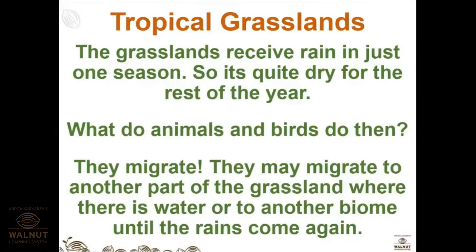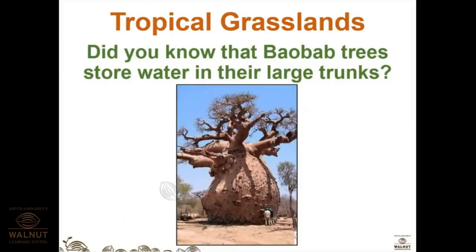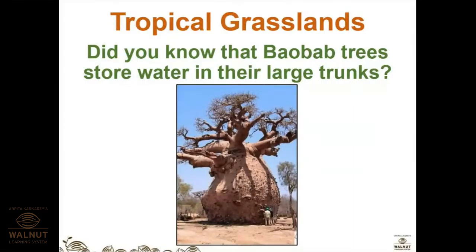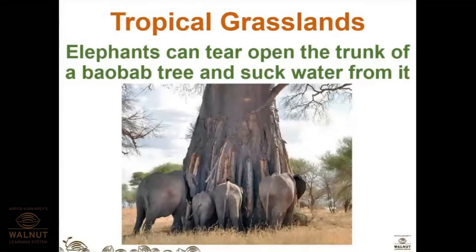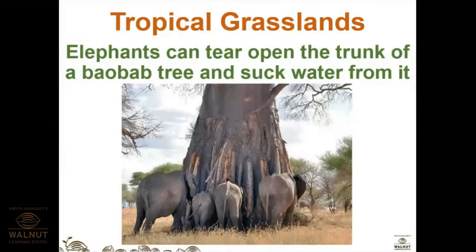Animals are smart — they know which season they need to migrate. Did you know that baobab trees store water in their large trunks? This is similar to how cactus and other thorny plants store water in their stems, and how camels store water in their humps.